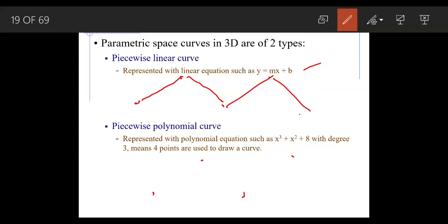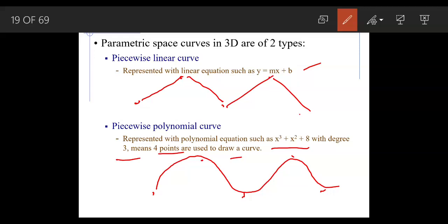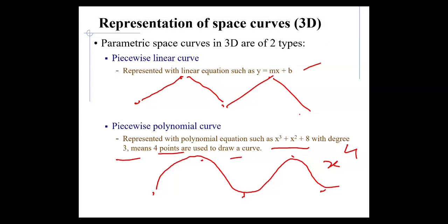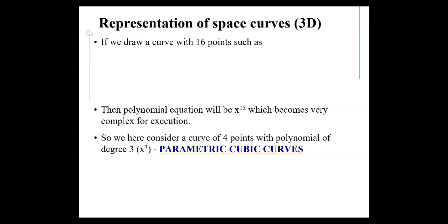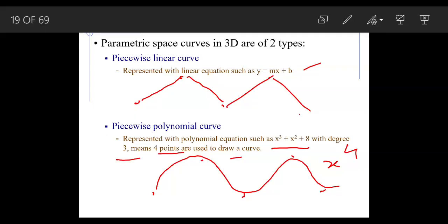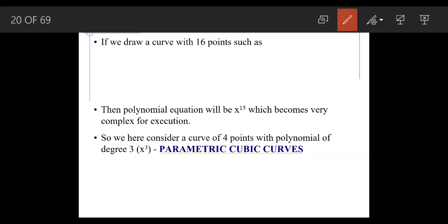The second type is piecewise polynomial curve. For the same five points, instead of straight lines we draw a curve in a polynomial way. This is represented with polynomial equations such as x³ + x² + 8. When the degree is 3, four points are used to draw a curve. With five points, the degree becomes x⁴.